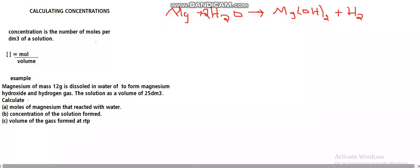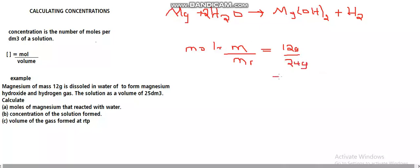Now that the equation is balanced, we can work out part one: calculate the number of moles of magnesium. Moles equals mass divided by molar mass. The mass given is 12 grams, and the molar mass of magnesium from the periodic table is 24 grams per mole. So 12 divided by 24 gives you 0.5 moles.